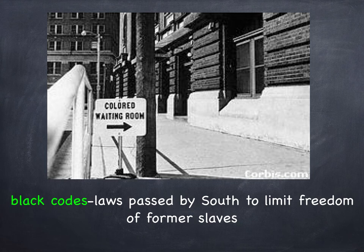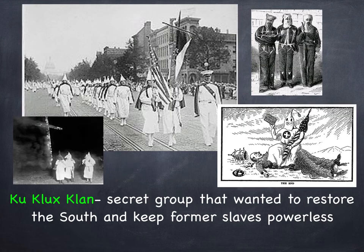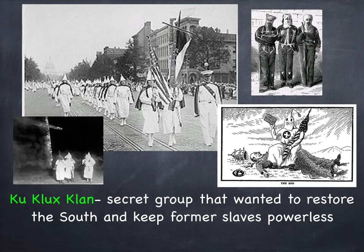In addition to these laws, there were also secret groups that would terrorize former slaves. The Ku Klux Klan was the most famous — a secret group that wanted to restore the South to the time before the Civil War and keep former slaves powerless. For example, if an African-American man could pass literacy tests or get the money to vote, maybe that evening the Klan might visit his house, beat him up, beat up his children, burn his house, kill his animals, or perhaps kill him — as a way of making an example, so that other African-Americans would be fearful of exercising their right to vote or trying to become an equal member of society. These secret groups operated alongside the laws passed in the American South to keep African-Americans down.